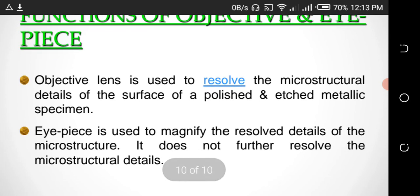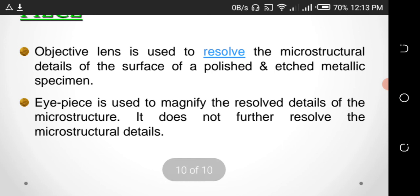Functions of objectives and eyepiece. Objective lens is used to resolve the microstructural details of the surface of the polished and etched metallic specimen. Eyepiece is used to magnify the resolved details of the microstructure. It does not further resolve the microstructural details.